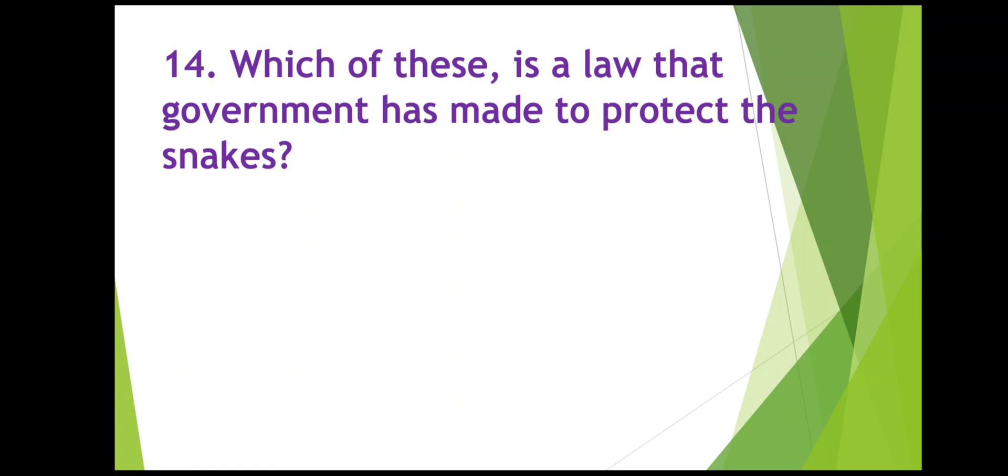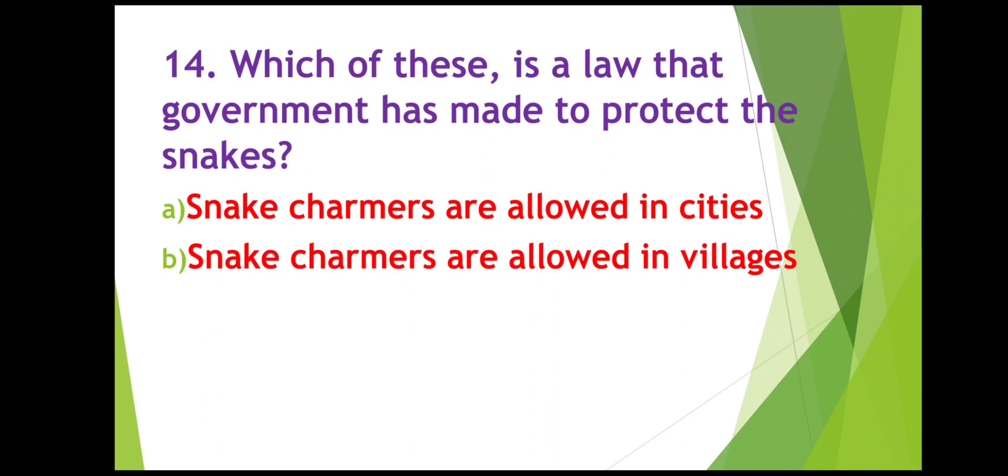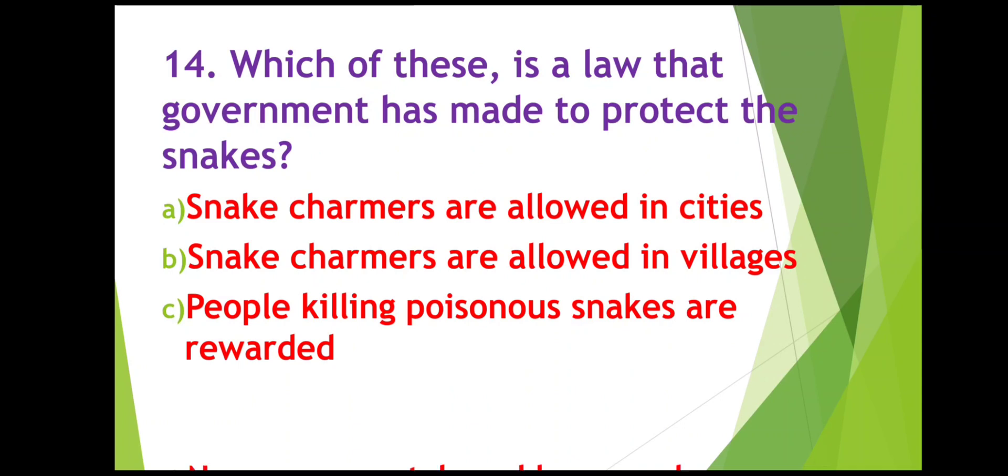Which of these is a law that government has made to protect the snakes? Which law has the government made to protect snakes? Snake charmers are allowed in cities, snake charmers are allowed in villages, people killing poisonous snakes are rewarded, or no one can catch and keep snakes. The right answer is D, no one can catch and keep snakes. To protect the wildlife and the snakes, the government has made a law that no one is allowed to catch and keep wild animals or snakes. This is the law that government has made to protect the snakes.